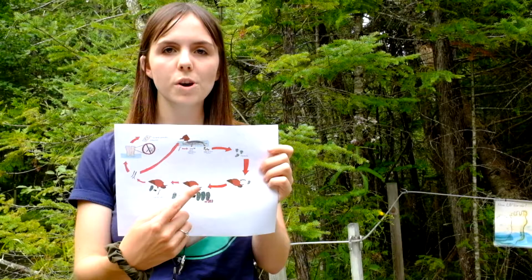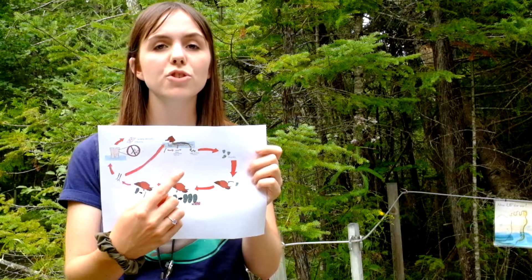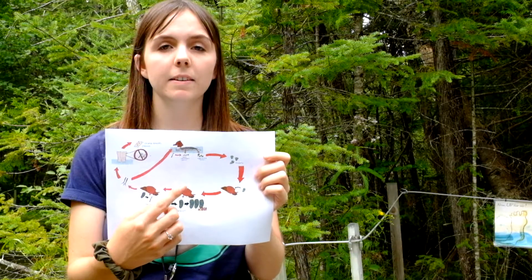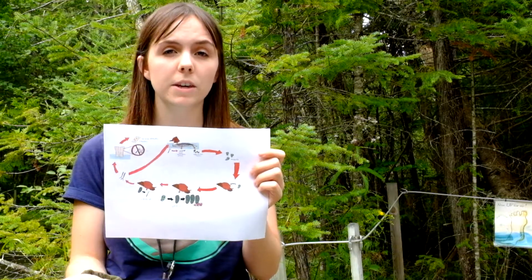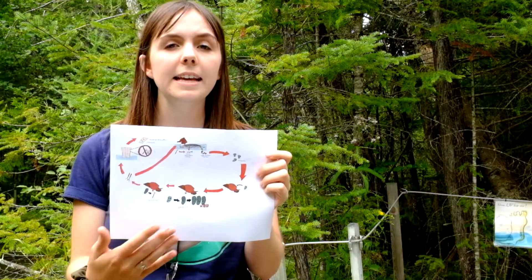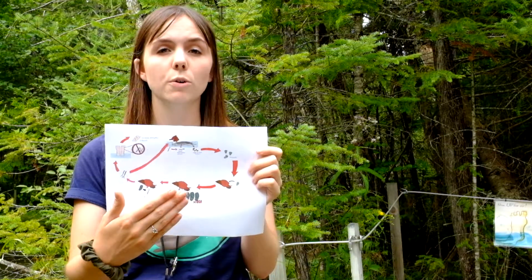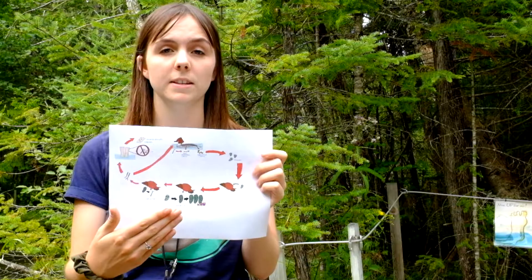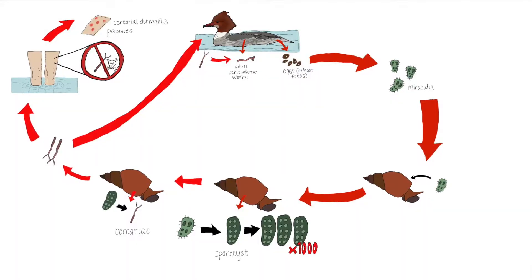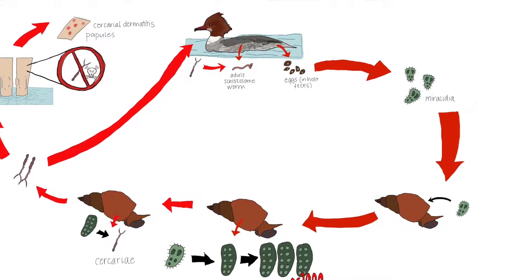The adult worm lives in the bloodstream of its host, usually near its intestine, where it can live for a couple of years. In that time they're laying hundreds of thousands of eggs into its host's digestive system, and those eggs eventually make it into the water column through the host species.